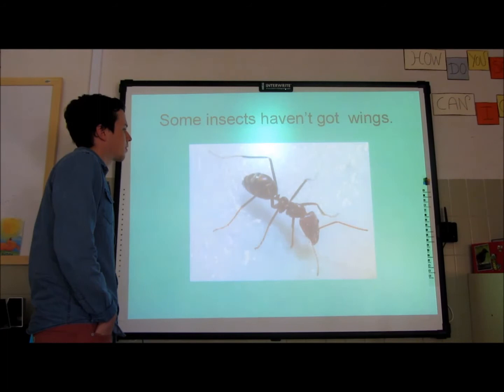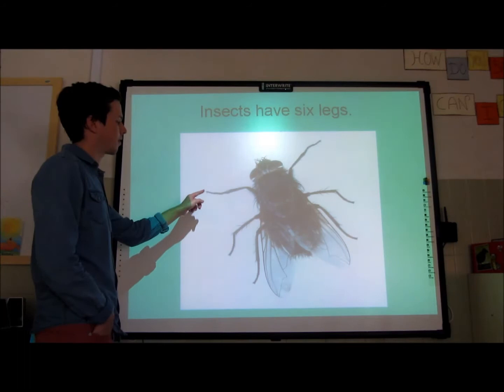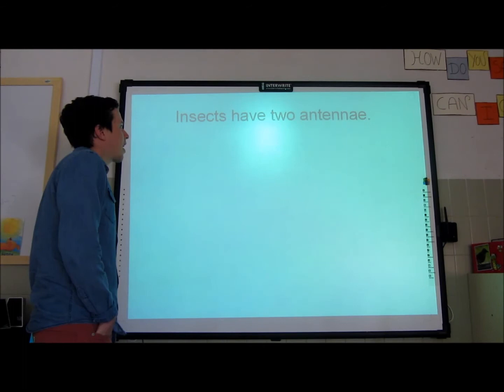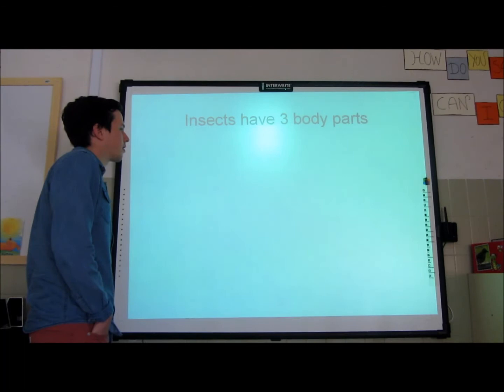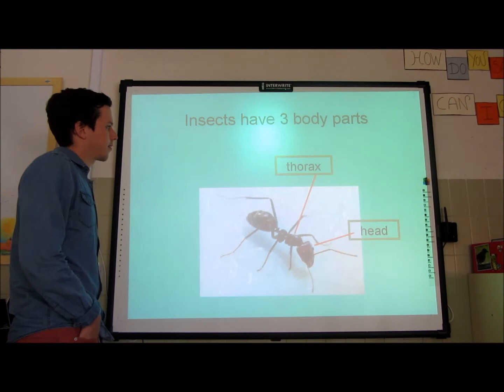Insects have six legs. Insects have two antennae. Insects have three body parts: head, thorax, and abdomen.